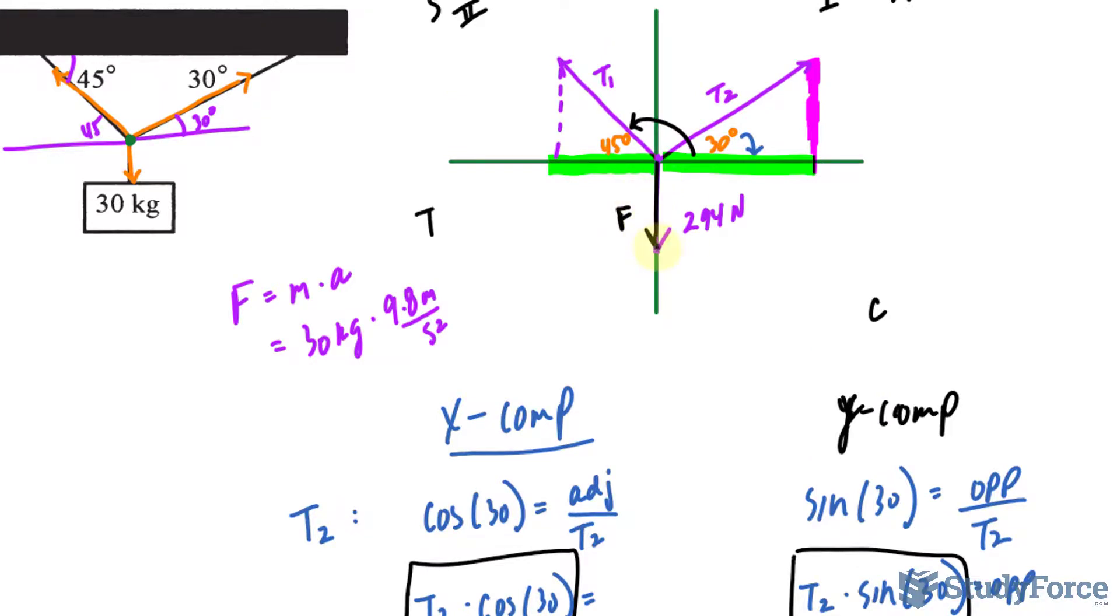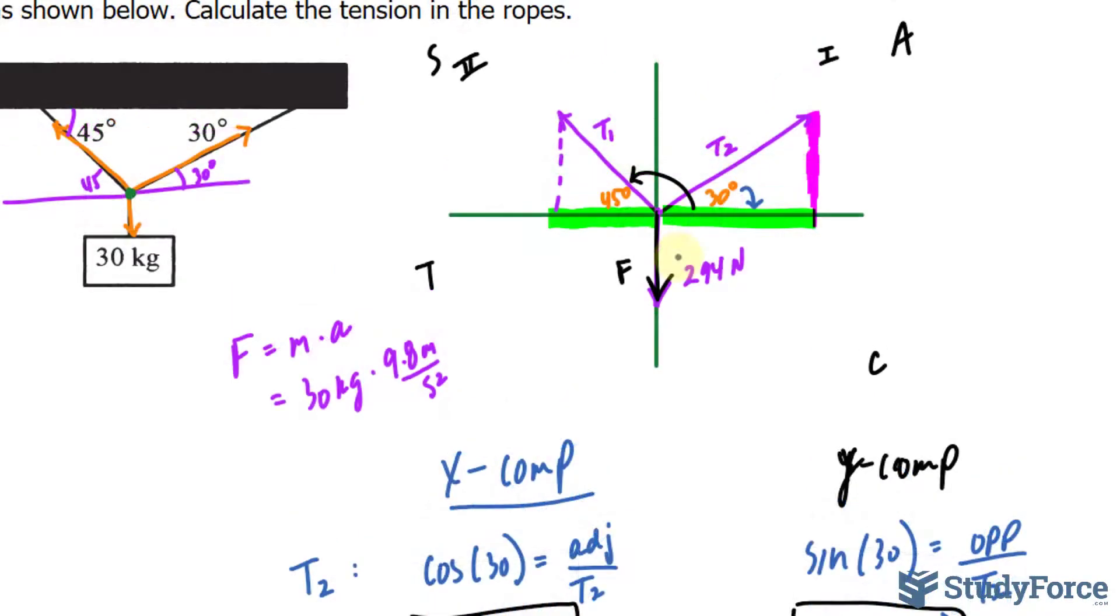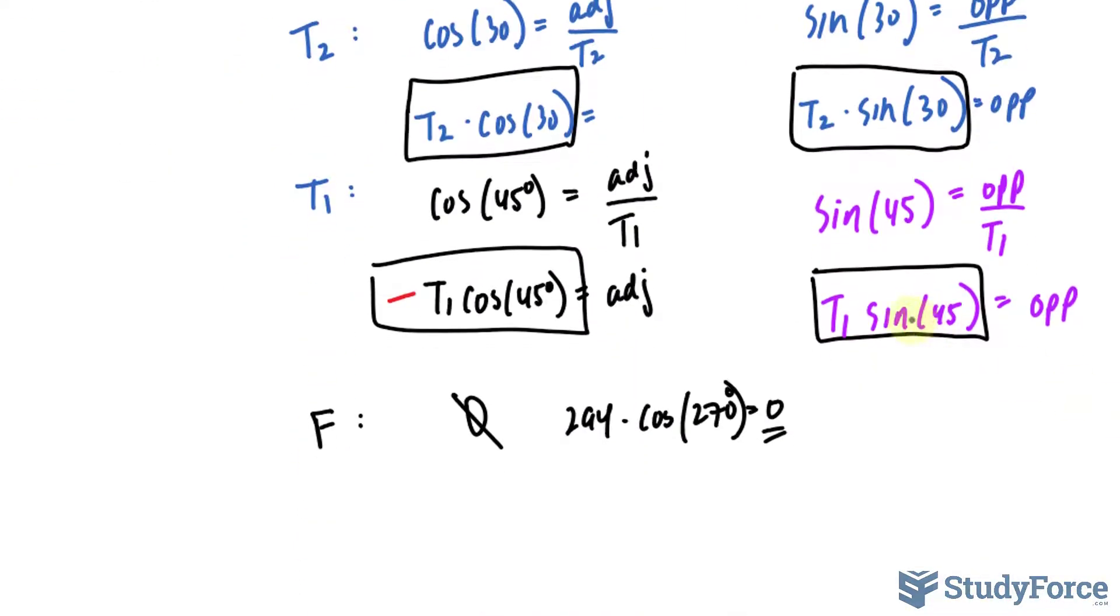The y component of this vector is 294 or negative 294 because it's going directly down. Up is positive, down is negative in this case. So I have minus 294, and of course you can figure this out systematically. If you were to write down 294 sine at an angle of 270, that would give you negative 294. We'll be adding these three together and they should all equal to zero.